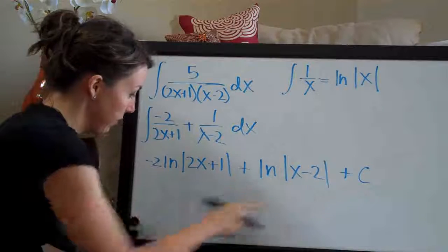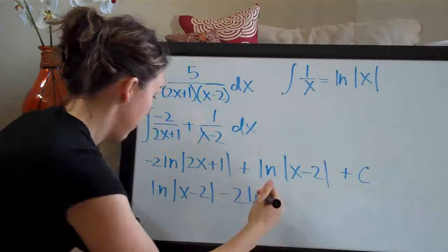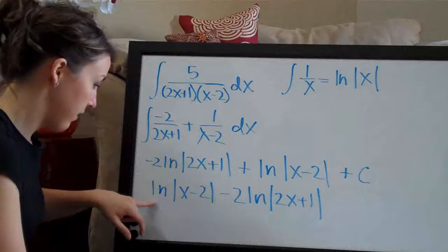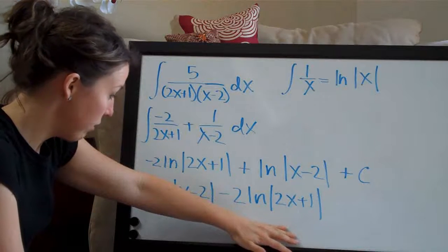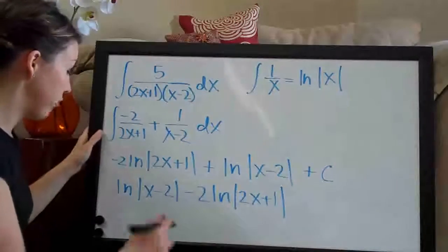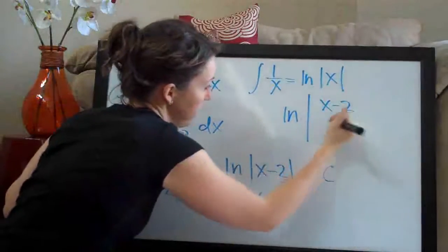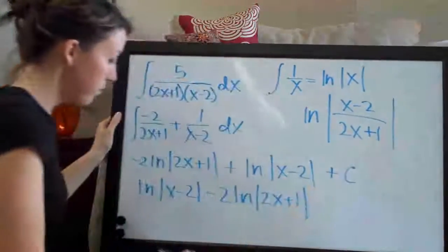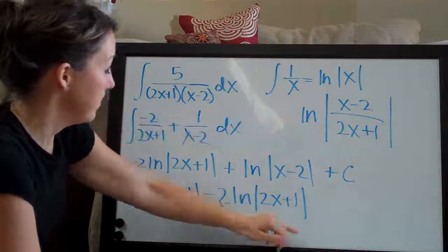I'm going to flip the terms around and bring the ln|x-2| out in front: ln|x-2| - 2·ln|2x+1|. When you have the natural log of one value minus the natural log of another value, you can simplify them by turning them into a fraction. So this becomes ln of the absolute value of (x-2)/(2x+1), because the first term goes on top and the second term goes on the bottom.